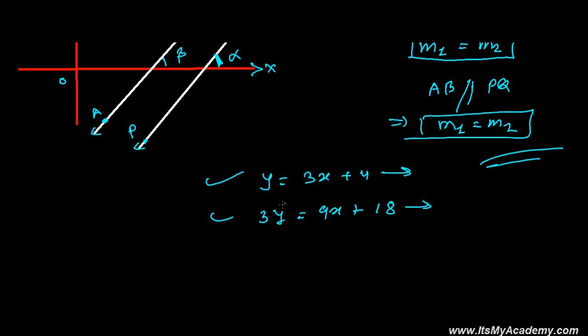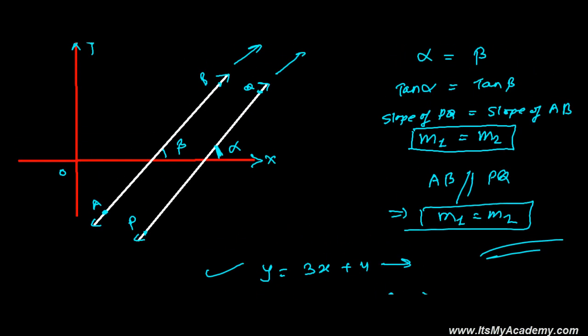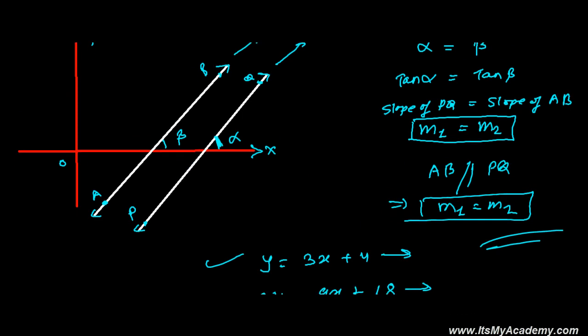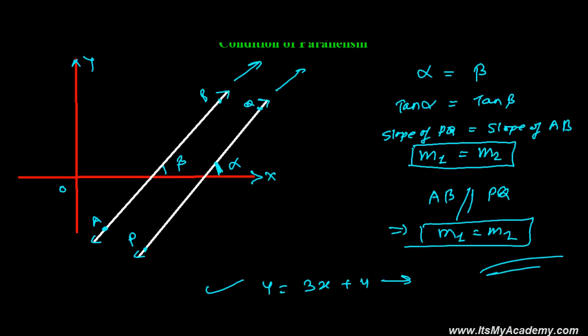Just know that if two lines have the same slope, then those two lines are parallel. In the next video, we're going to learn the condition of perpendicularity — when two lines become perpendicular to each other. Catch you in the next video, goodbye.